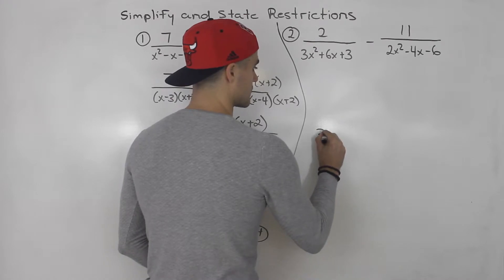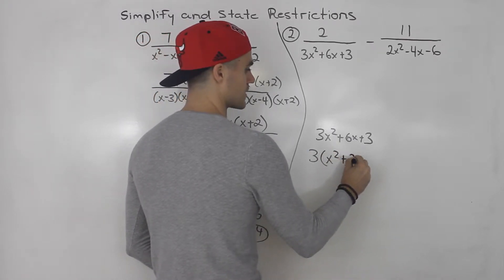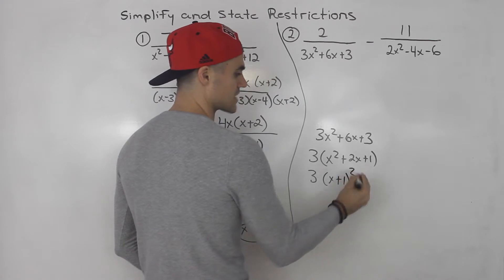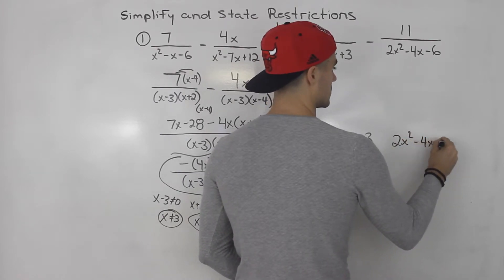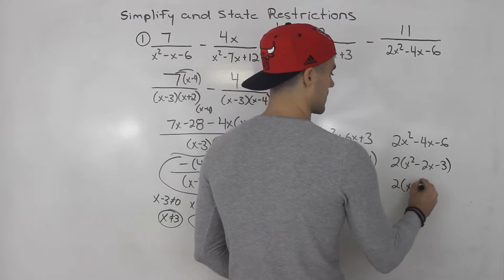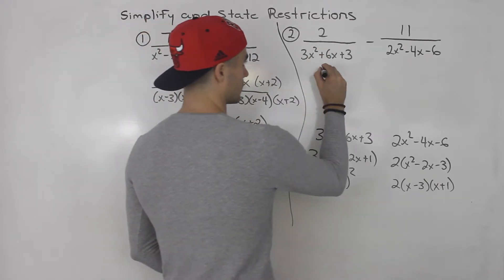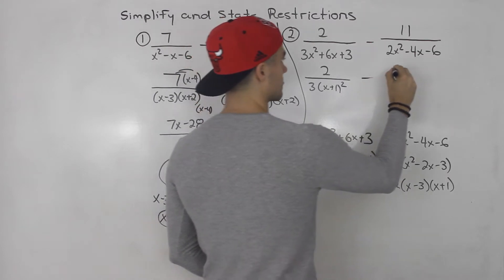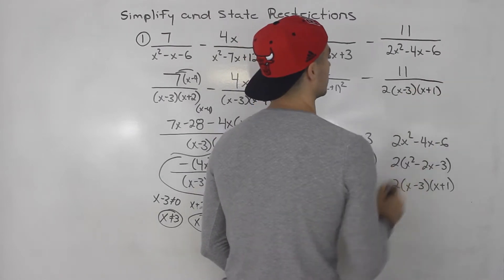For the first denominator, factor out a three to get three times x squared plus two x plus one, which factors into three times bracket x plus one squared. For the second denominator, factor out a two to get two times x squared minus two x minus three, which factors into two times bracket x minus three times bracket x plus one.